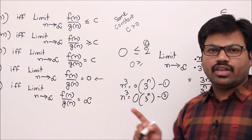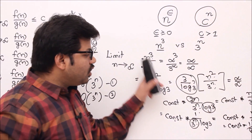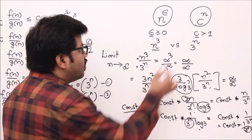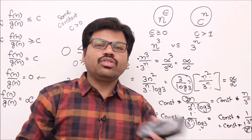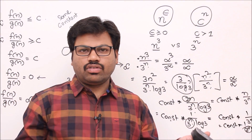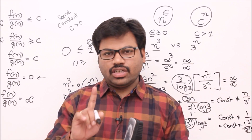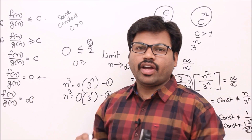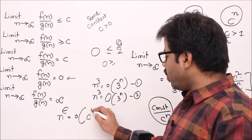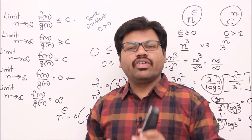This result generalizes: for any n^ε and any c^n with c > 1, the limit is always 0. The numerator reduces step by step via L'Hôpital's rule until it becomes a constant, while c^n in the denominator persists, giving constant/c^n → 0. So the general summary is: n^ε = o(c^n) and n^ε = O(c^n) for any ε ≥ 0 and c > 1.